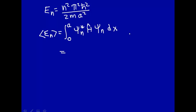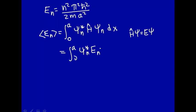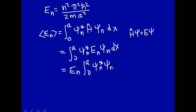Well, we know the Schrödinger equation: H psi equals E psi. So H psi is just equal to E psi. This will be the integral from 0 to A of complex conjugate times E psi n — energy is a constant — so this will be the energy of state n times the integral from 0 to A of psi n star psi n dx. This is equal to 1 because we normalize the wave functions over the interval 0 to A. So the average value of E n is just E n.